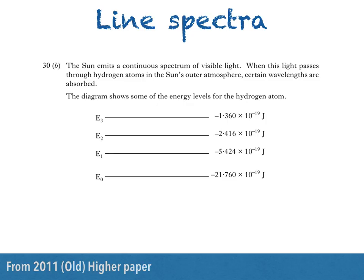We'll also see how the production of line spectra can be explained in terms of electrons making transitions to higher or lower energy levels. Here's part of a question from the 2011 old Higher paper.